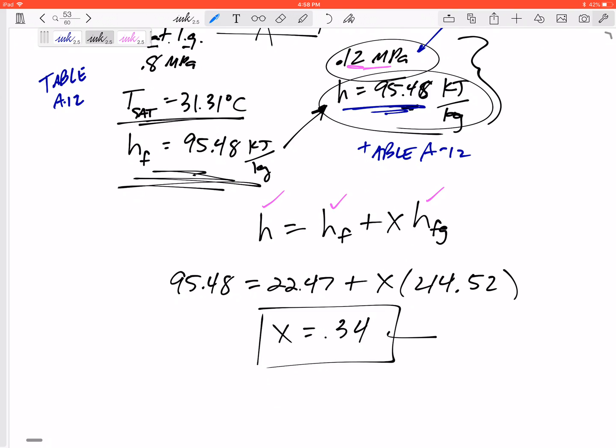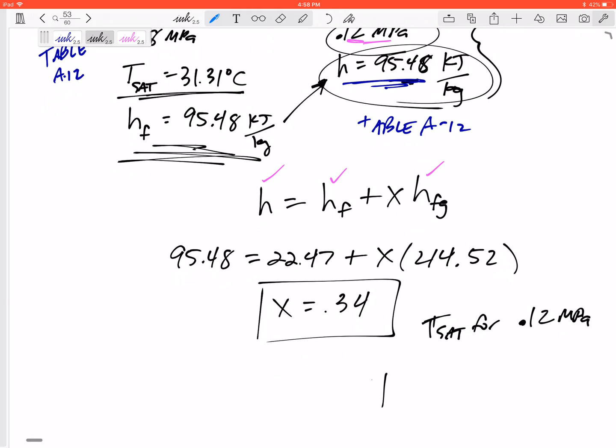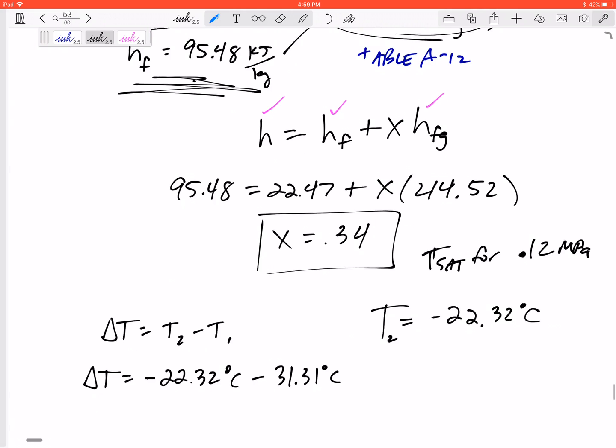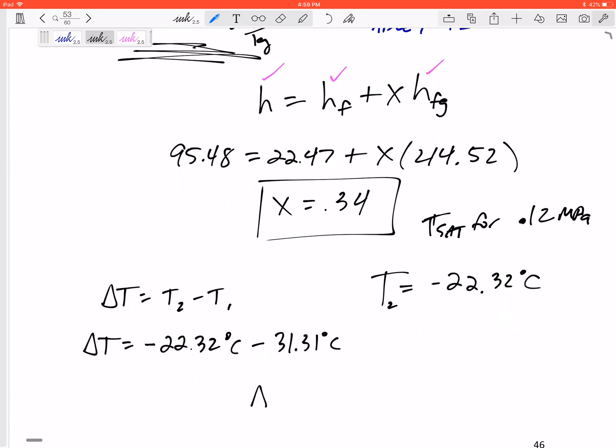Now this also is a mixture, and so it is also at its T_sat—T_sat for its pressure 0.12 MPa. So the T_sat for 0.12 MPa is negative 22.32 degrees C. That's its exit temperature. So the delta T, the T_outlet minus the T_inlet, would be negative 22.32 minus 31.31. Alright, delta T would be negative 53.63 degrees C.